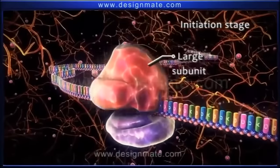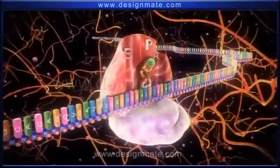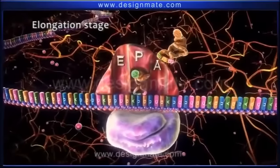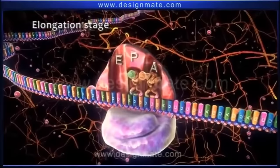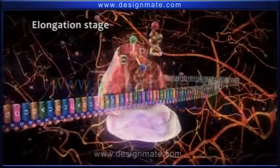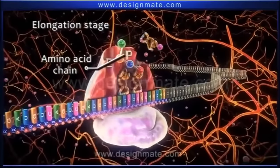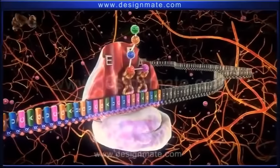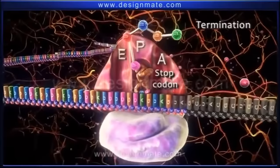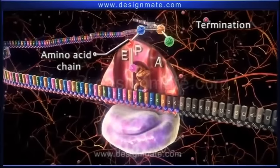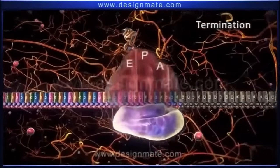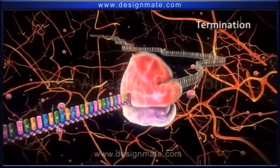The larger subunit of the ribosome then combines with the small subunit. The second stage is the elongation stage, in which the incoming aminoacyl-tRNA fits in the A site. A bond is formed between methionine and the amino acid on the tRNA, and the process is repeated until a chain of amino acids is formed. The last stage is termination: when the ribosome reaches the stop codon UAG, elongation stops and the newly formed amino acid chain — the protein macromolecule — detaches from the ribosome. Subsequently, ribosomal subunits along with the tRNA dissociate from the mRNA.